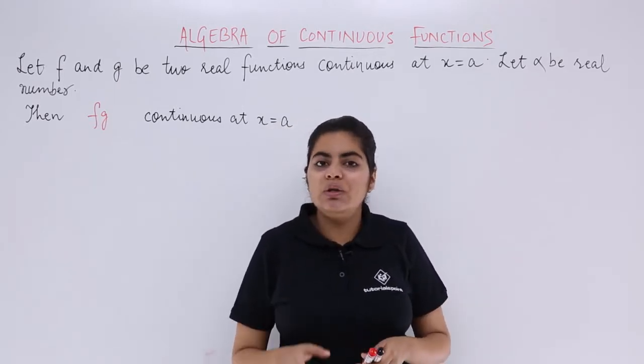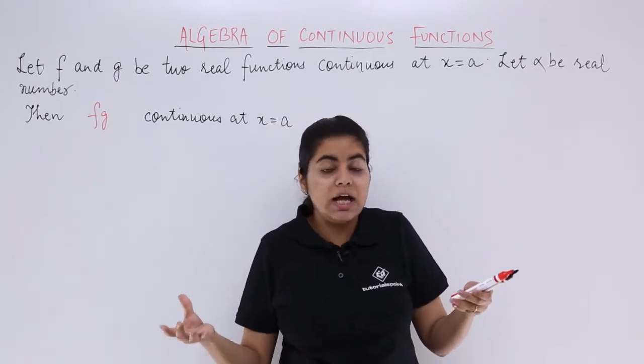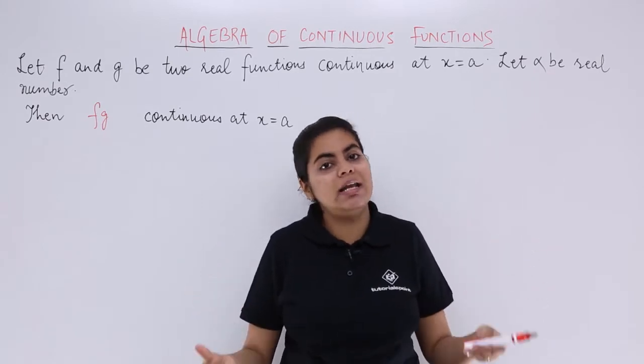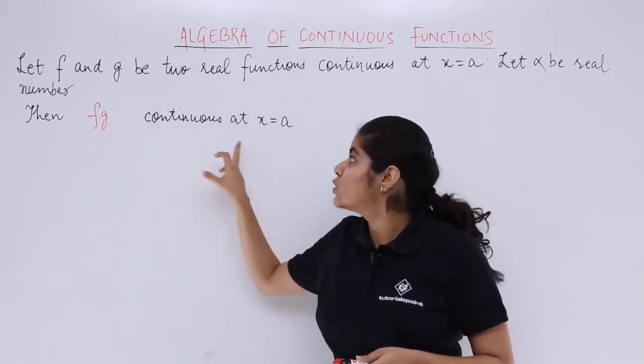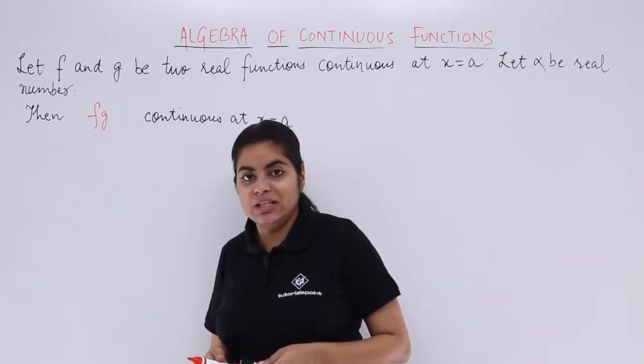Now what happens is, we know that when f and g are individually continuous at x equals a, we are supposed to prove that their product fg is also continuous at x equals a.